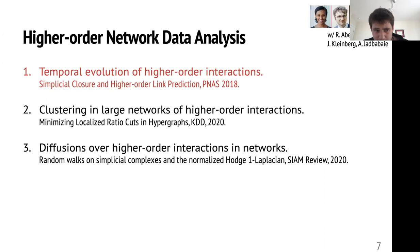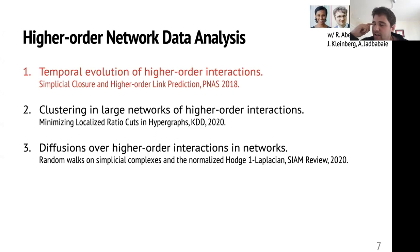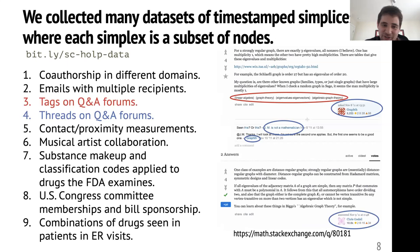I'm going to spend the first part of the talk on temporal evolution of higher-order interactions. This is joint work with Rediet Abebe, now at UC Berkeley; Michael Schaub, who was at MIT and has just started a job in Europe; John Kleinberg, my colleague at Cornell; and Ali Jadbabaie at MIT. Before even starting to ask about the right mathematical models, I usually like to start by collecting data and seeing what's going on — I wanted to collect data from the wild as a way of finding a good set of test cases.